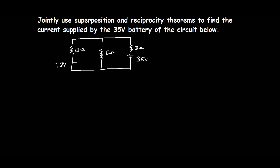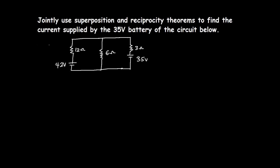In this lesson we are going to solve this question. The question says we should use superposition and reciprocity theorems to find the current supplied by the 35-volt battery of the circuit. So we have to apply superposition and reciprocity to find this current I supplied by the 35-volt source.